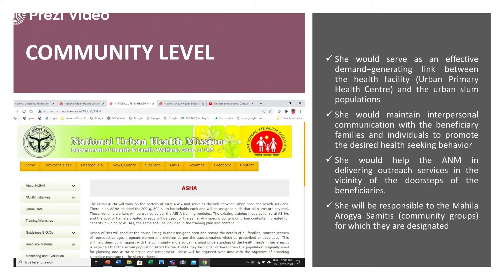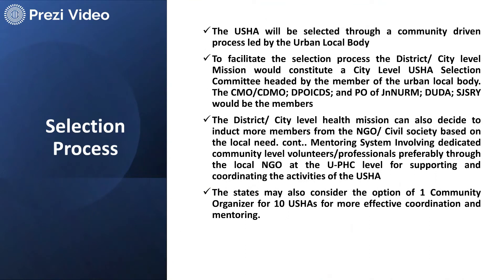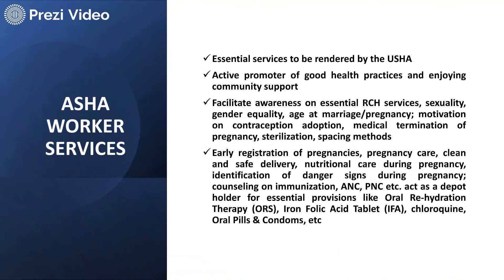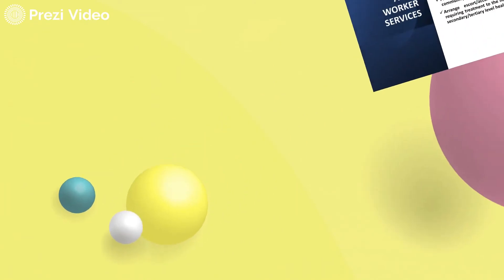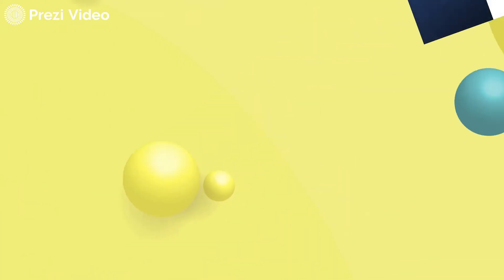USHA workers act as a link between urban primary health centers and urban slums, maintaining interpersonal communications and promoting desired health-seeking behavior. They help in antenatal care, maternity deliveries, and are responsible for Mahila Arogya Samitis. They are selected through urban local bodies like municipal corporations, and their numbers can vary depending on the requirement, area, and population density. They look after women's care including pregnancy care, clean and safe deliveries, nutritional care during pregnancy, identification of dangers, and antenatal and postnatal care. They also facilitate health-related services at Anganwadi centers and urban primary health centers.